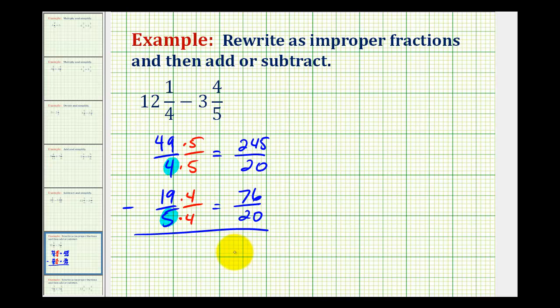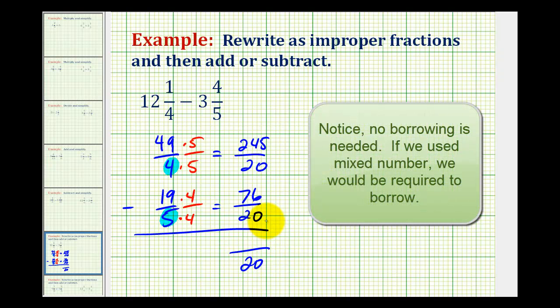Now that we have a common denominator, we can subtract. Denominator stays the same. Our numerator is going to be two hundred forty-five minus seventy-six, which is equal to one hundred sixty-nine.